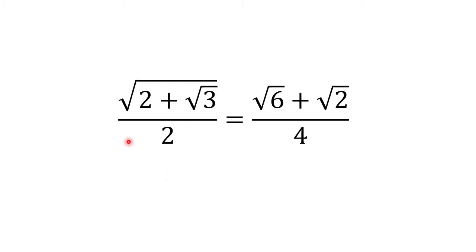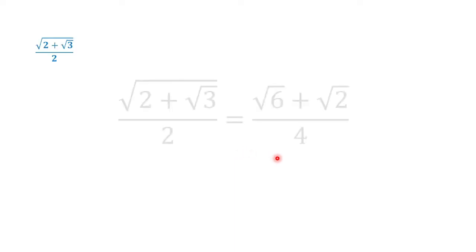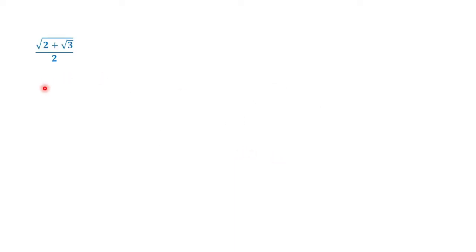Let us show that square root of 2 plus square root of 3 over 2 is equal to square root of 6 plus square root of 2 over 4. So this is the given: square root of 2 plus square root of 3 over 2. We can write this as the square root of 2 plus square root of 3 over 4.